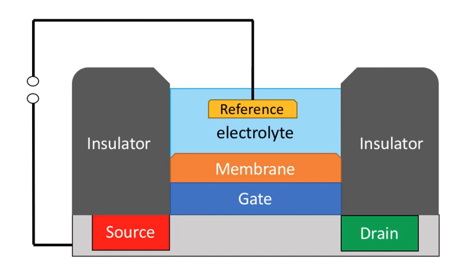A CHEMFET is a chemically sensitive field-effect transistor, that is a field-effect transistor used as a sensor for measuring chemical concentrations in solution. When the target analyte concentration changes, the current through the transistor will change accordingly.